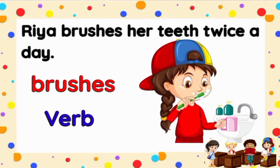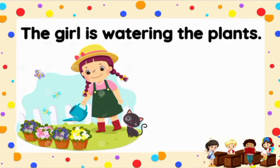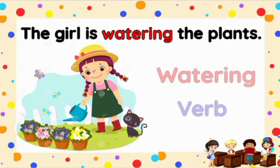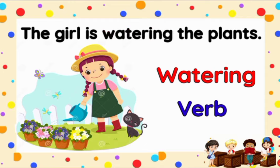'Rhea brushes her teeth twice a day.' Here the word 'brushes' is a word that tells us about an action that Rhea does, so 'brushes' is a verb or an action word. 'The girl is watering the plants.' The word 'watering' tells us about an action that the girl is doing, so 'watering' is a verb or an action word.